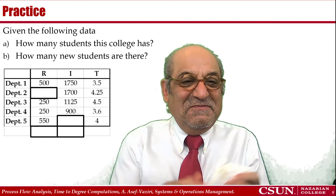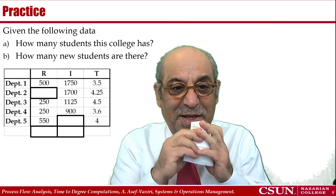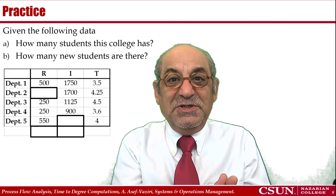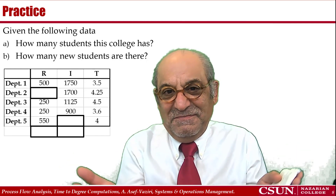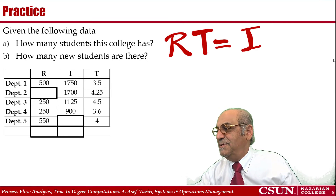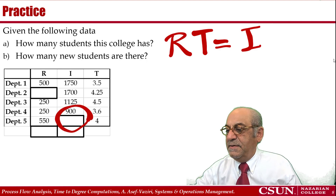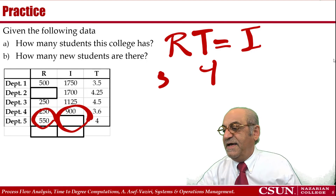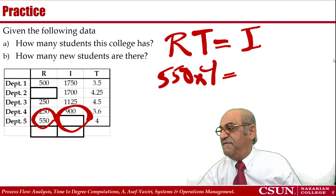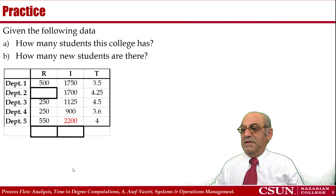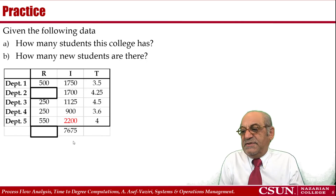Now, let me know if you can solve this problem — it's very simple and you should be able to find it out quickly. The question is: what is the number of incoming students in this college based on this data, and how many students does this college have? Throughput times flow time equals inventory. Flow time is 4, throughput is 550, so 550 times 4 is 2,200. Therefore, adding up these numbers gives a total headcount summation of 7,675.